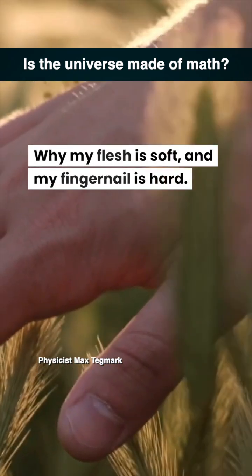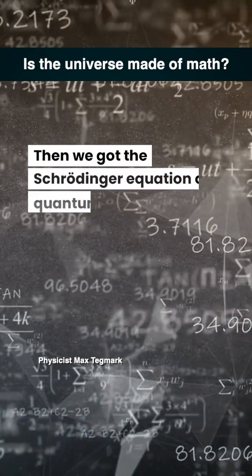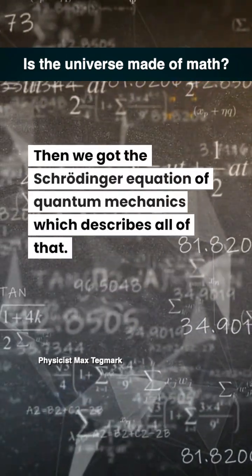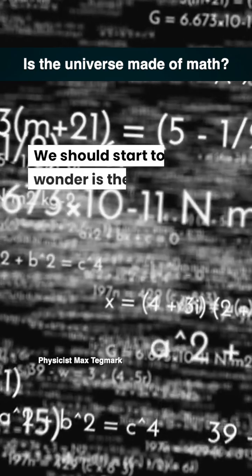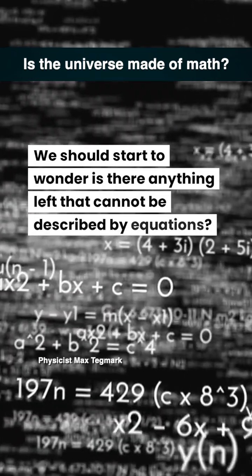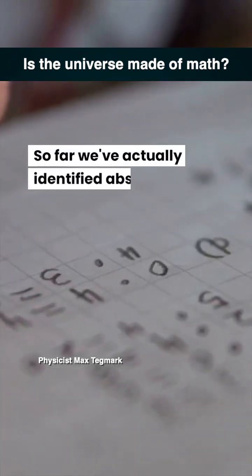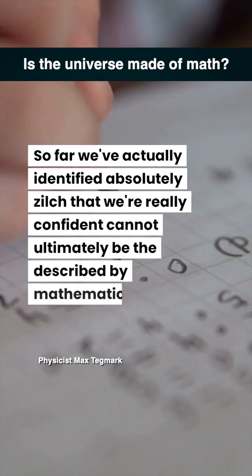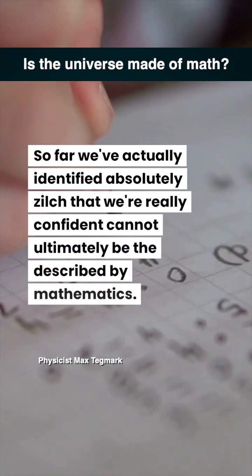Then we got the Schrödinger equation of quantum mechanics, which describes all of that. Which you start to wonder: is there anything left that cannot be described by equations? So far we've actually identified absolutely zilch that we're really confident cannot ultimately be described by mathematics.